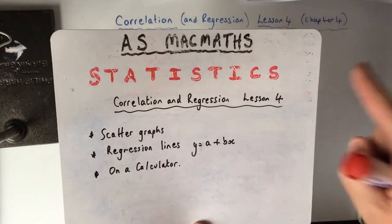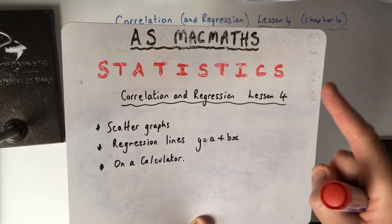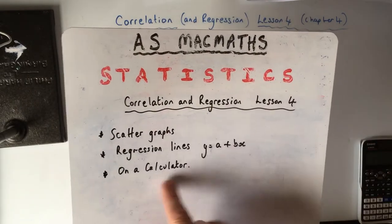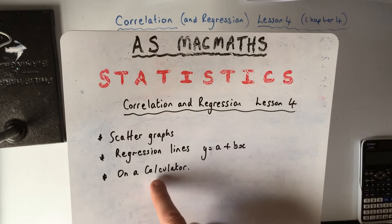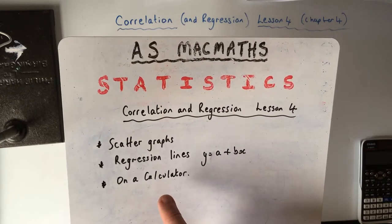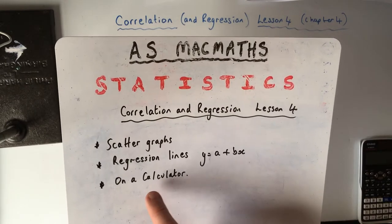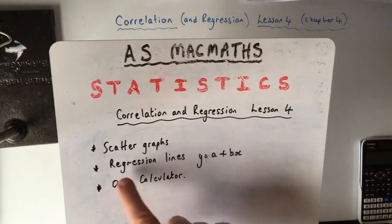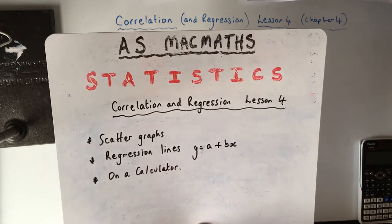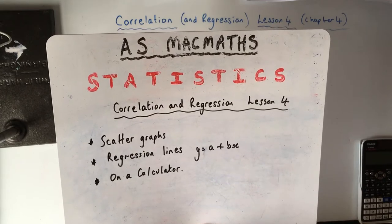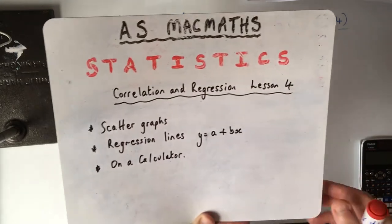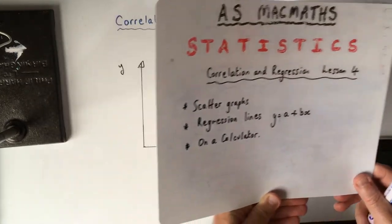The textbook obviously can't explain how to work it out on a calculator, so I'm going to show you how to do that. You do need to know your line of regression because you may get asked to do that on the exam. So we'll talk about scatter graphs and correlation first.